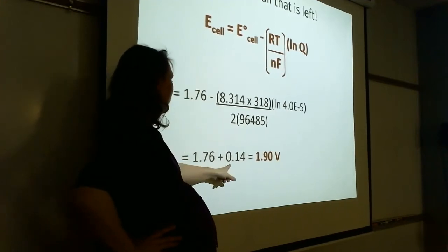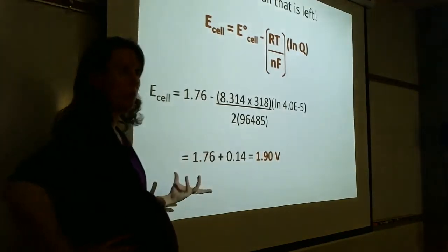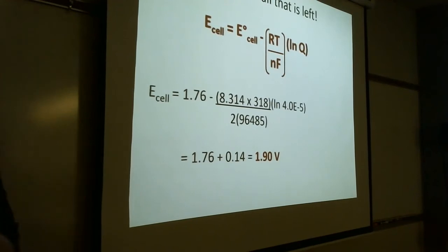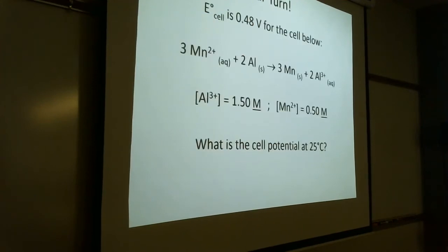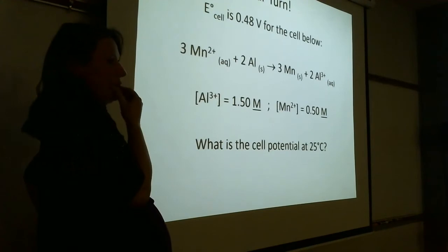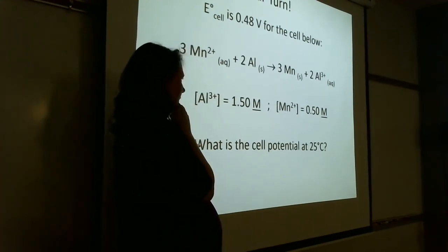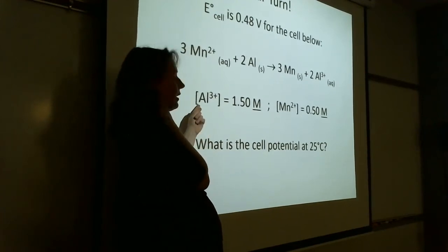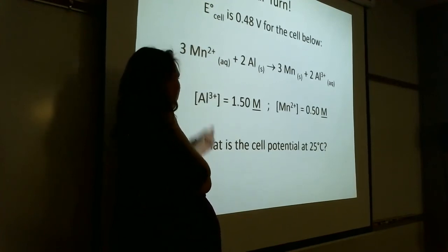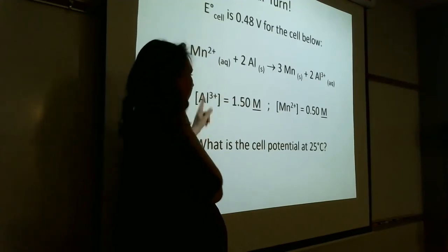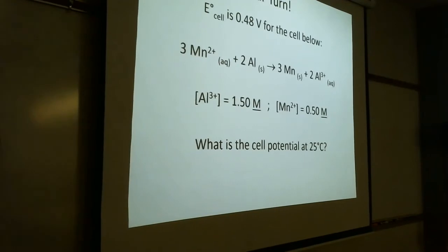Sometimes playing around with the conditions will make your cell potential go down, or even make it non-spontaneous. Now let's try another one: I've given you E°cell and the balanced equation. The question asks for cell potential at 25°C. You might think you don't need the Nernst equation since it's 25°C — but are these standard concentrations? No. So even at standard temperature, non-standard concentrations require the Nernst equation.